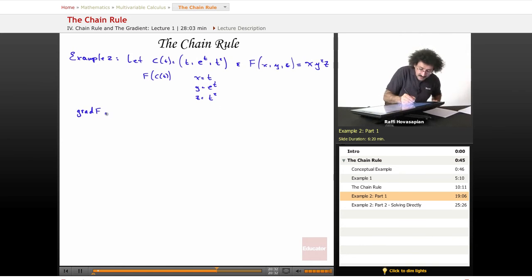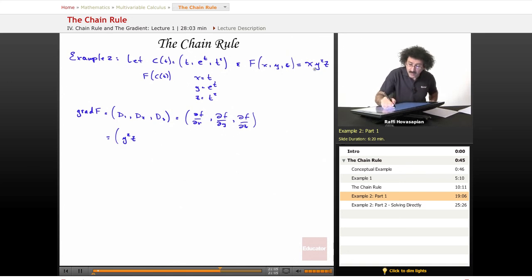The gradient of f is equal to the first partial, the second partial, and the third partial. The first partial, the derivative with respect to x is y²z. The derivative with respect to y is 2xyz. And the derivative with respect to z is xy². So this is my gradient of f.